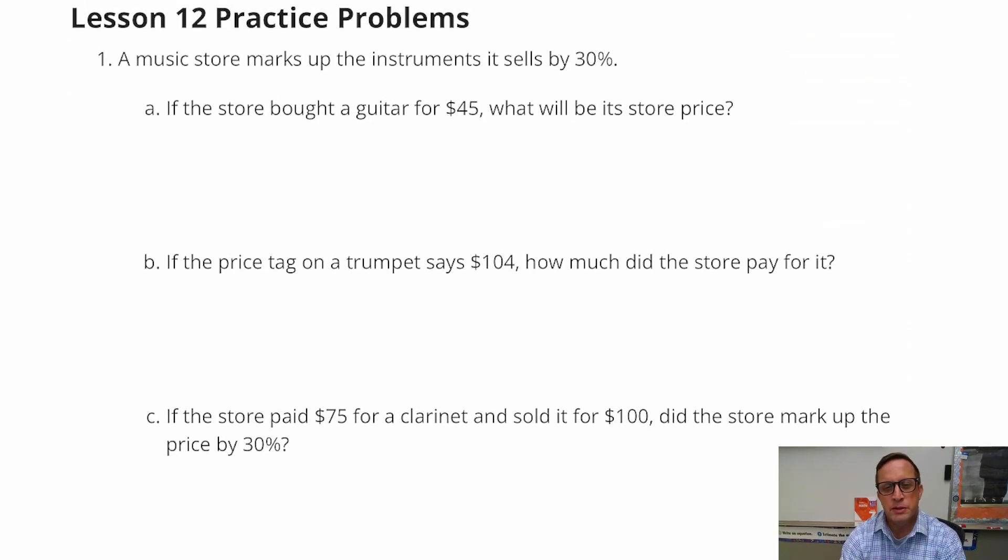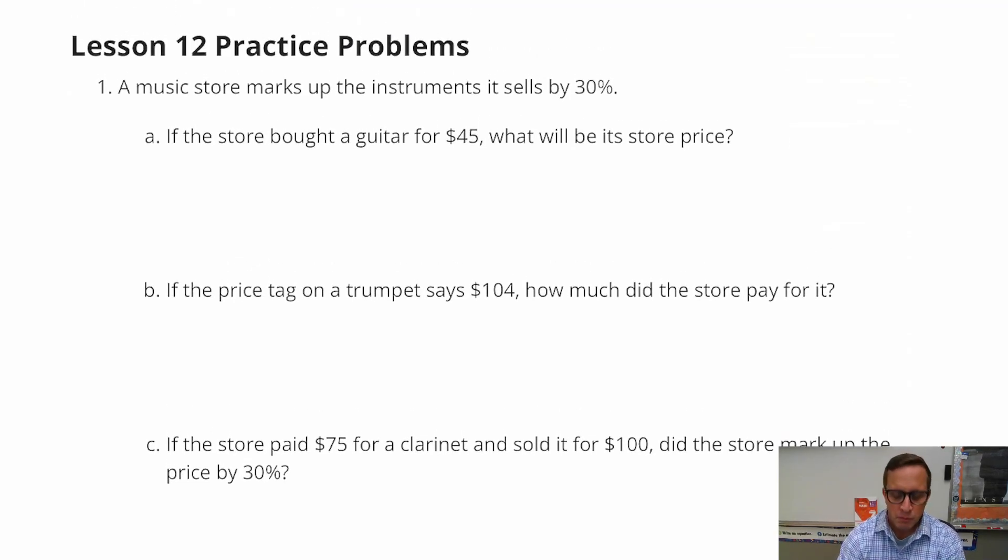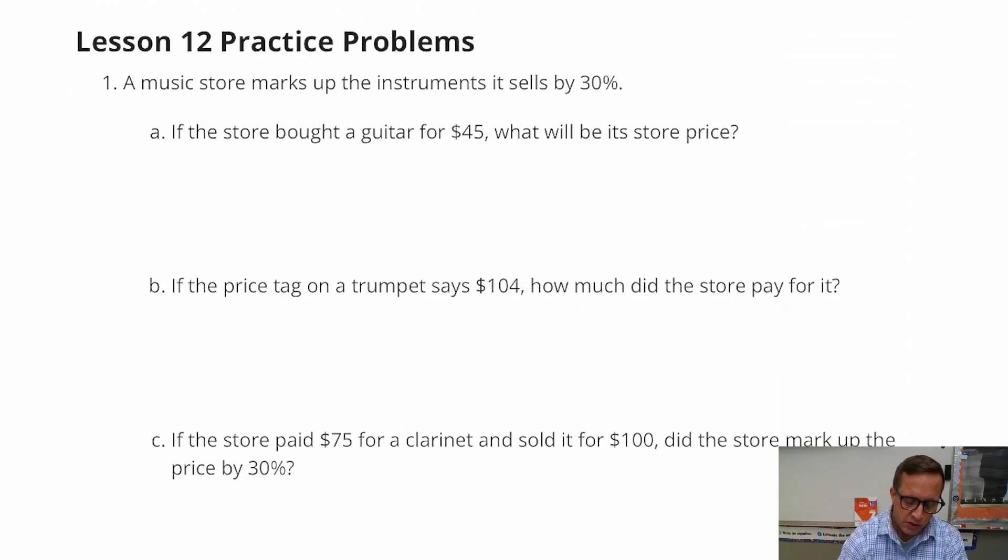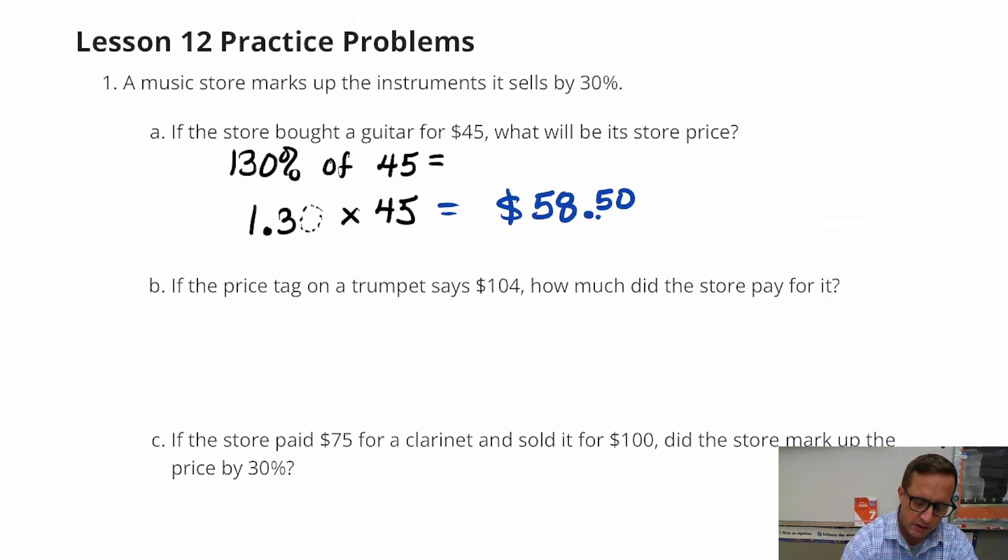So if it's a markup, we're most likely going to use 130%. So we're going to want to find 130% of 45. We're going to figure out what that is. So change that 130% to a decimal. And if you want to, you can put a zero there, times 45. And when you do that, you should get, it's going to be $58.50.